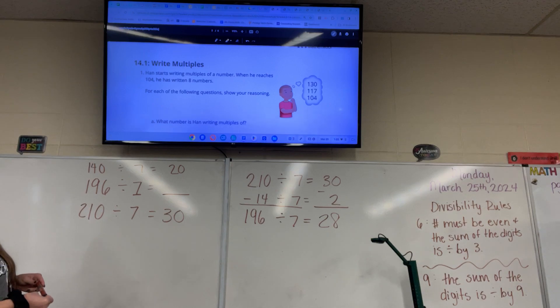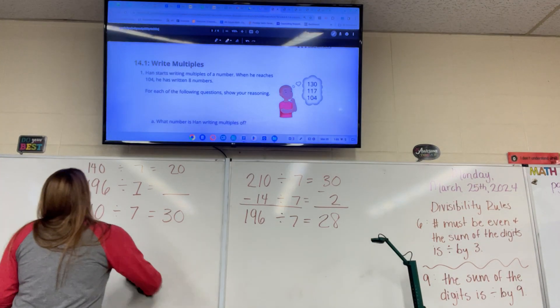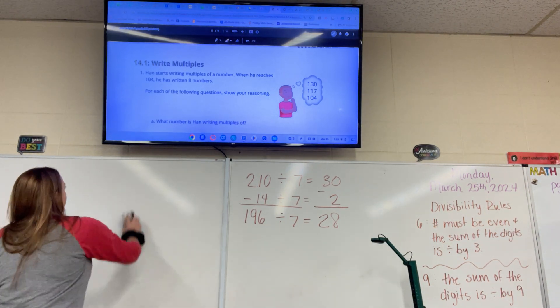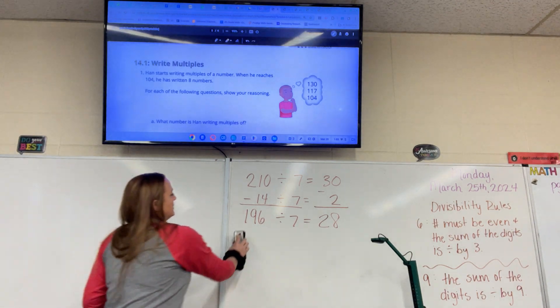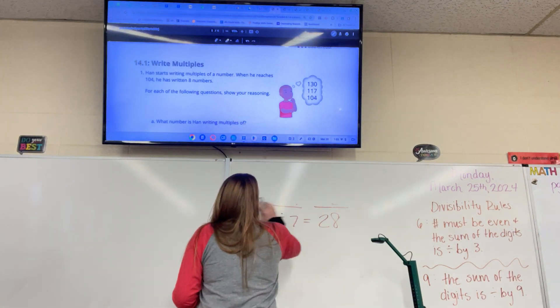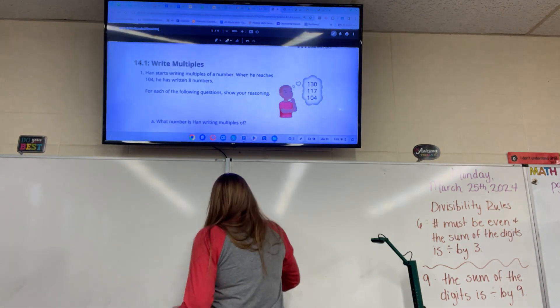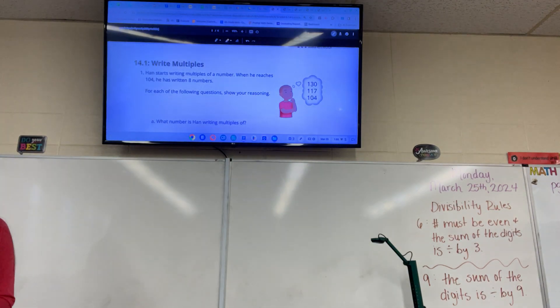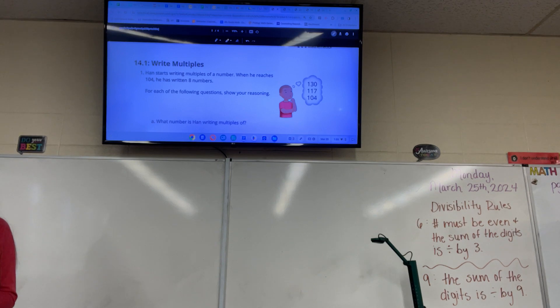Hans starts writing multiples of a number. When he reaches 104, he has written 8 numbers. So I want you guys to look at your multiplication table and see if you can figure out what number.